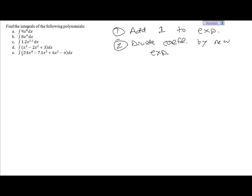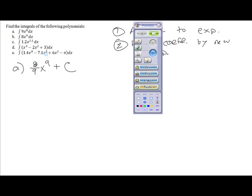So we're adding 1 and then dividing by the coefficient. So in letter a, our answer is going to be x^9, and then we need to divide the coefficient by the new exponent, which is 9, and then add plus C. Actually, let me correct that - this right here should be a 9.